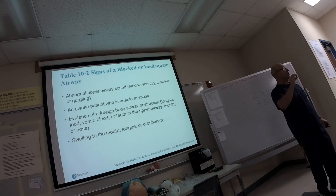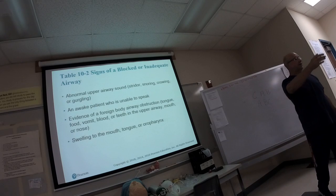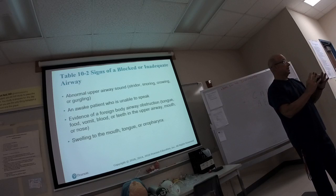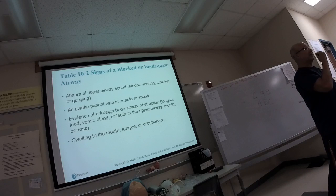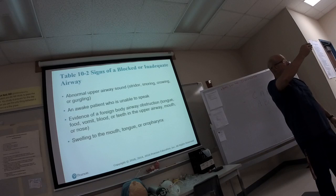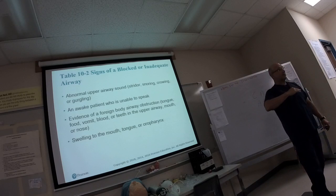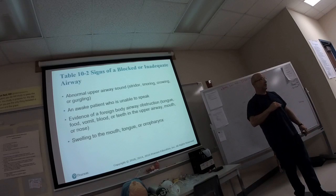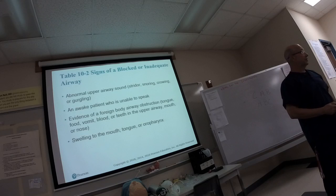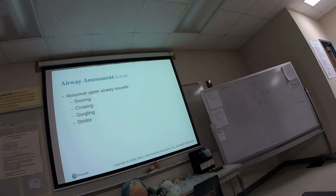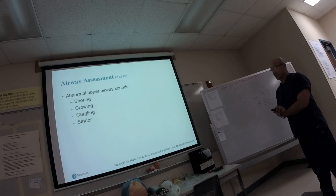Inadequate because it creates a V/Q mismatch — the ventilation, bringing air in, versus the Q, the perfusion part where gas exchange takes place. Something like the tongue, vomit, or blood would create a mismatch because it's not allowing air in or is partially blocking the airway. Other sounds include snoring respirations, gurgling, and stridor — all indicating some sort of obstruction. We'll cover all of these in the respiratory emergency chapter.